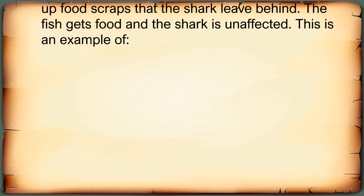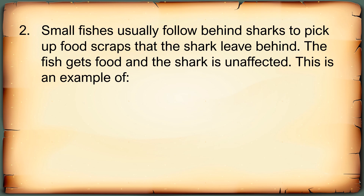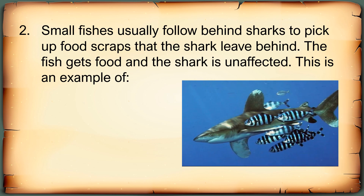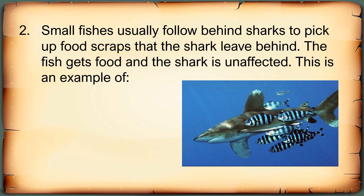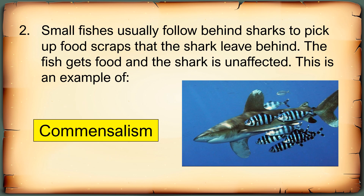Second question: Small fishes usually follow behind sharks to pick up food scraps that the shark leaves behind. The fish gets food and the shark is unaffected. This is an example of A. Mutualism, B. Commensalism, C. Competition, or D. Predation. You have five seconds. The correct answer is Commensalism.